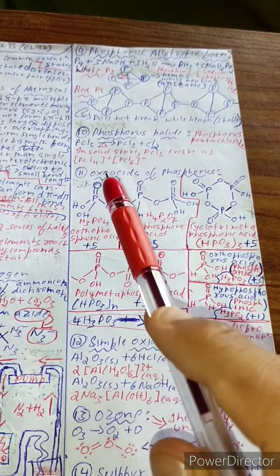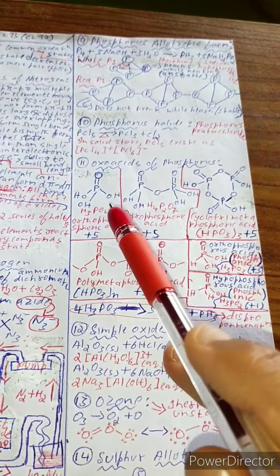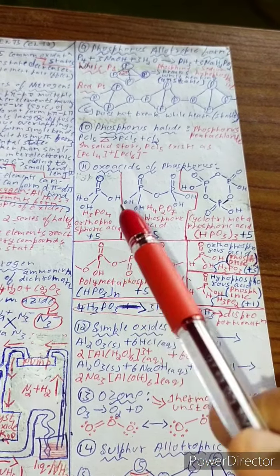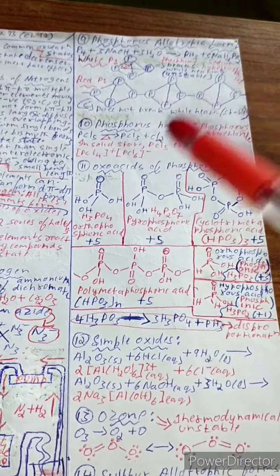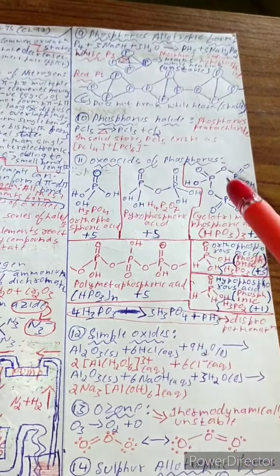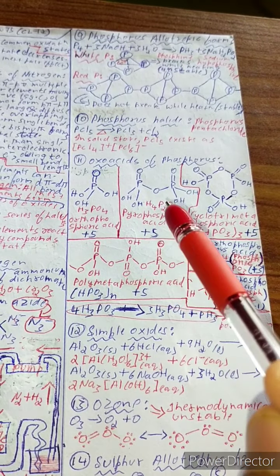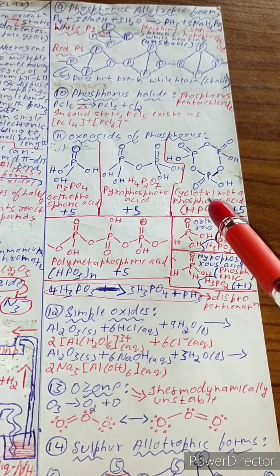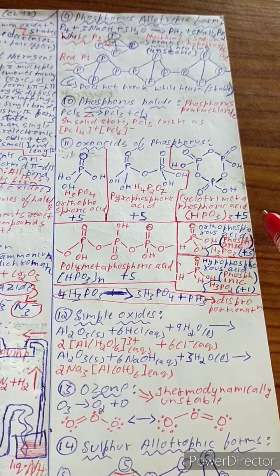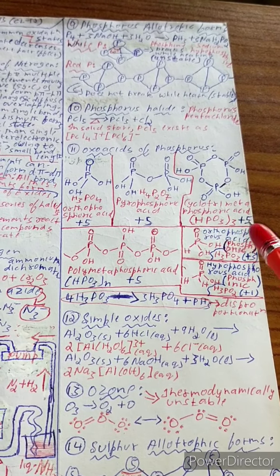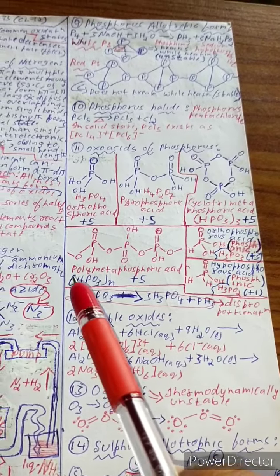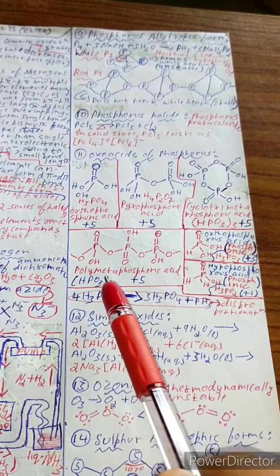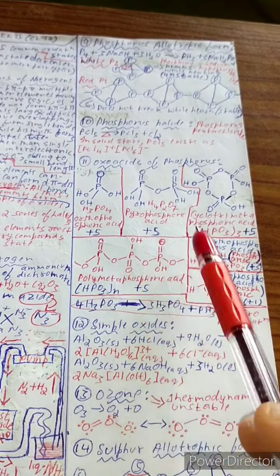Oxoacids of phosphorus: orthophosphoric acid H₃PO₄, oxidation state +5. Pyrophosphoric acid H₄P₂O₇, oxidation state +5. Cyclotrimetaphosphoric acid (HPO₃)₃, oxidation state +5. Polymetaphosphoric acid (HPO₃)n, oxidation state +5.